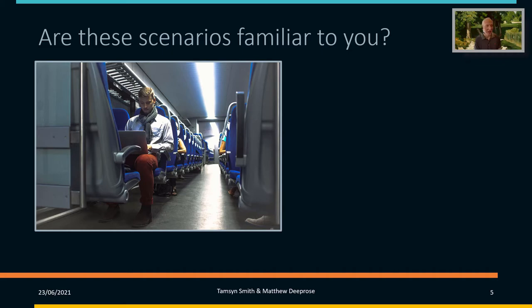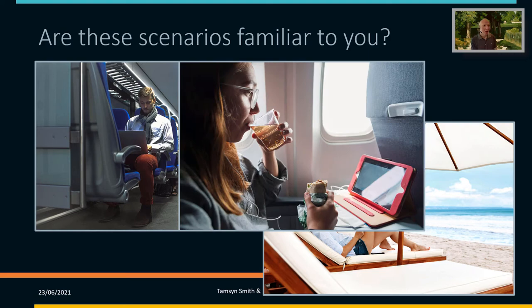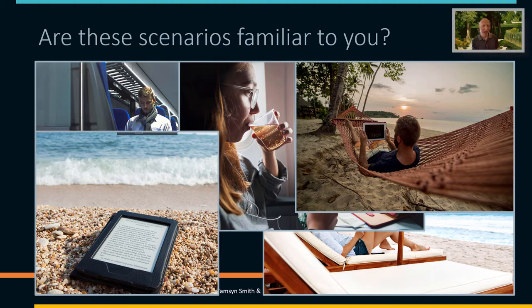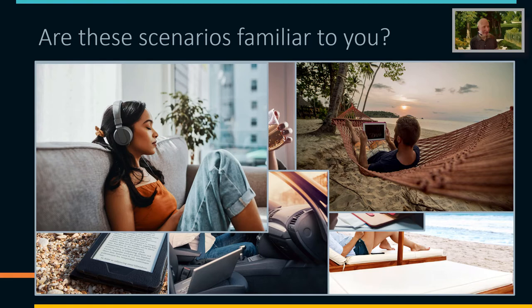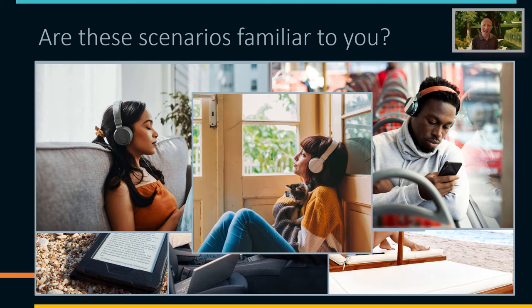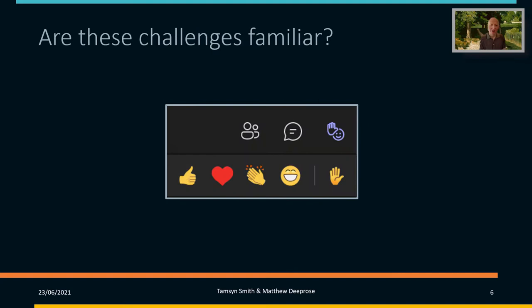Perhaps you've been on a train using a laptop, or using a tablet at the beach. Or perhaps on a plane, or using a Kindle in the sunshine — because they have such good contrast, it's much easier to see what's written on the Kindle. You might even be looking at a tablet while in a hammock, or trying to use a device while in a car. Or perhaps you prefer sometimes to listen to content — you might even be on the bus, or just chilling in a corner with your cat and listening to an audiobook.